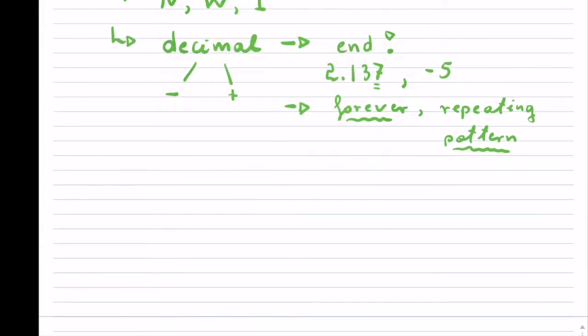One example, which is a very common example, might be this one, 0.333, and this goes on forever. The repeating pattern is just the 3 because that's the only thing that really just repeats for us here.